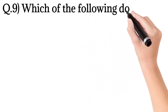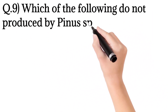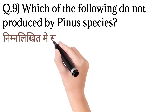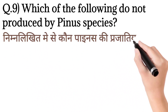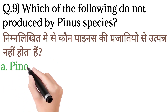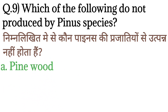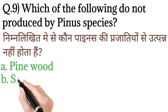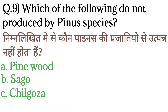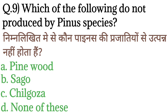Question number 9: Which of the following is not produced by Pinus species? — nimnlikhit mein se koun Pinus ki prajatiyon se utpann nahi hota? Option A: Pinewood. Option B: Sago. Option C: Chilgoza. And option D: None of these.